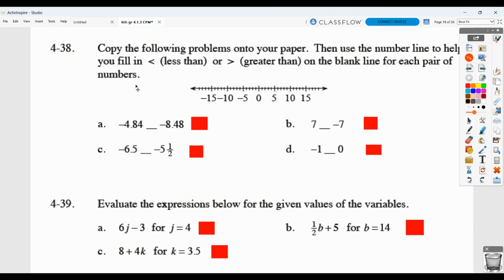Here, they want you to use a number line to help you fill in greater than, less than, or equal to. So how does negative 4 and 84 hundredths compare to negative 8 and 48 hundredths? Pardon me. Well, negative 4 and 84 hundredths would be about here. Negative 8 and 48 hundredths would be about here. So negative 4 and 84 hundredths is greater than. It is further to the right on the number line. 7 compared to negative 7. 7 is about here. Negative 7 is back here. And of course, 7 is greater than negative 7.